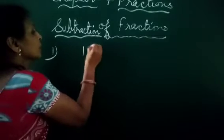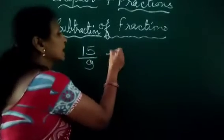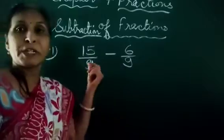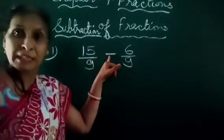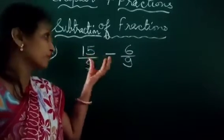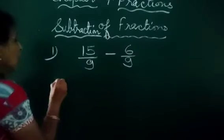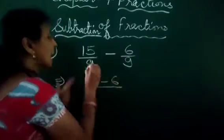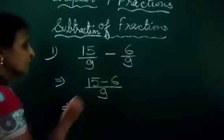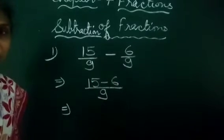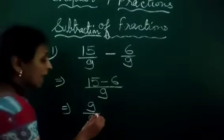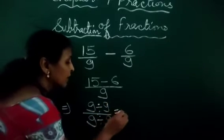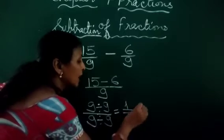Here is 15 upon 9 minus 6 upon 9. These two fractions are like fractions because both denominators are same and there is a minus sign in between. That is why we find out the difference of these two fractions. First we subtract the numerators — that is 15 minus 6 — and write the common denominator, that is 9. This gives 9 upon 9. We convert it into lowest form by dividing both sides by 9, giving 1 upon 1, or simply 1.